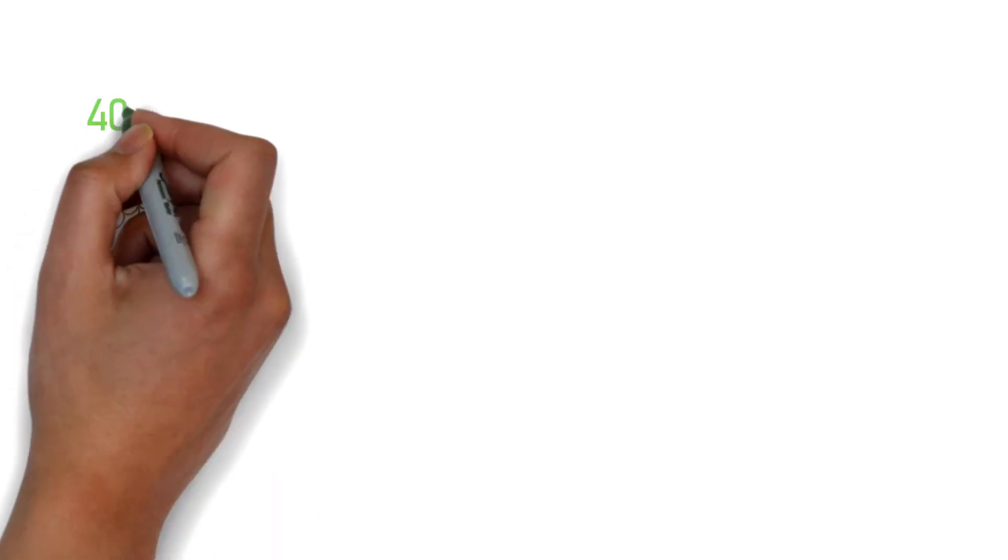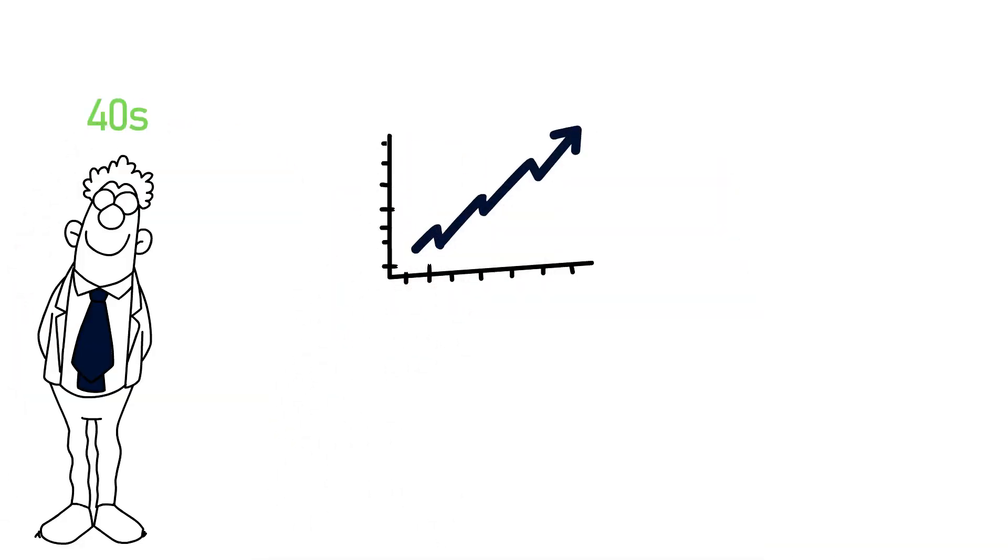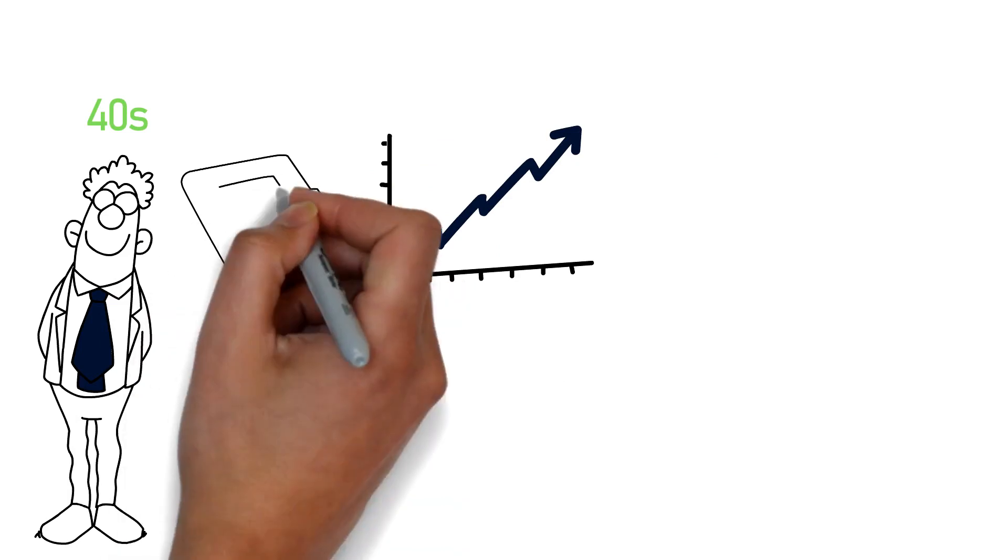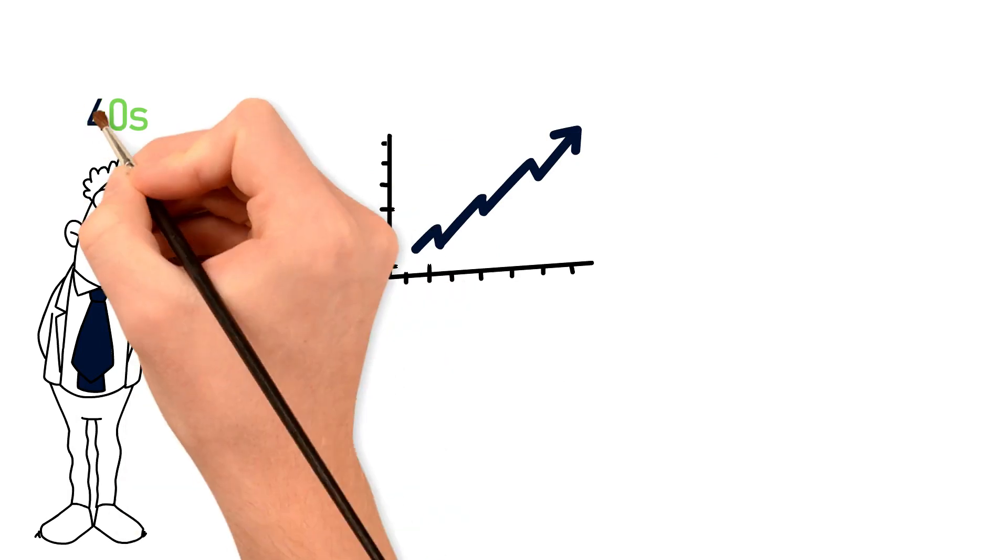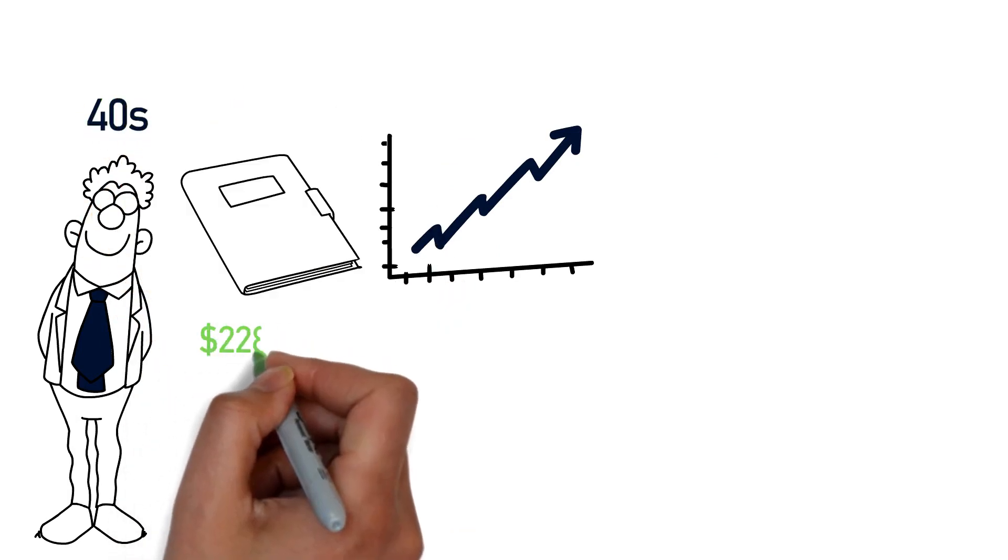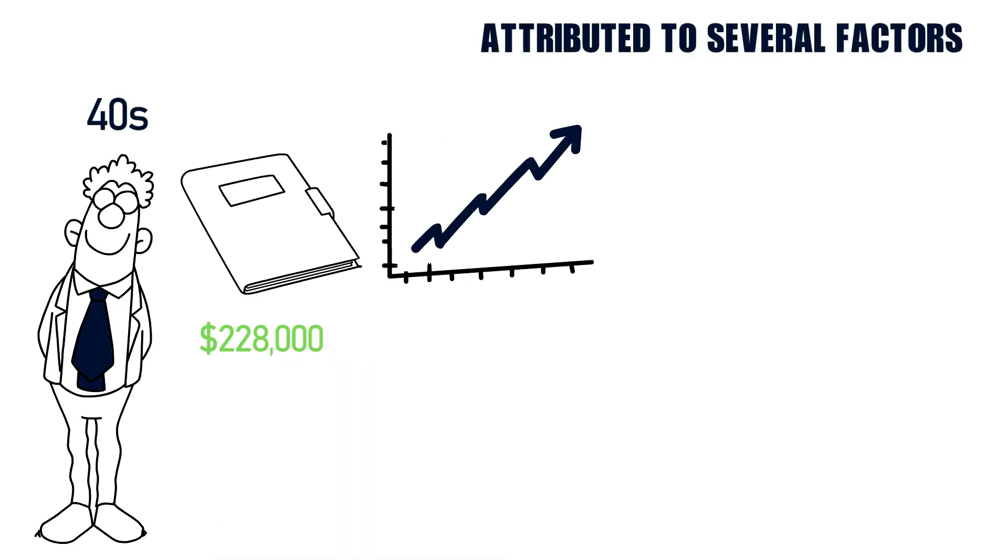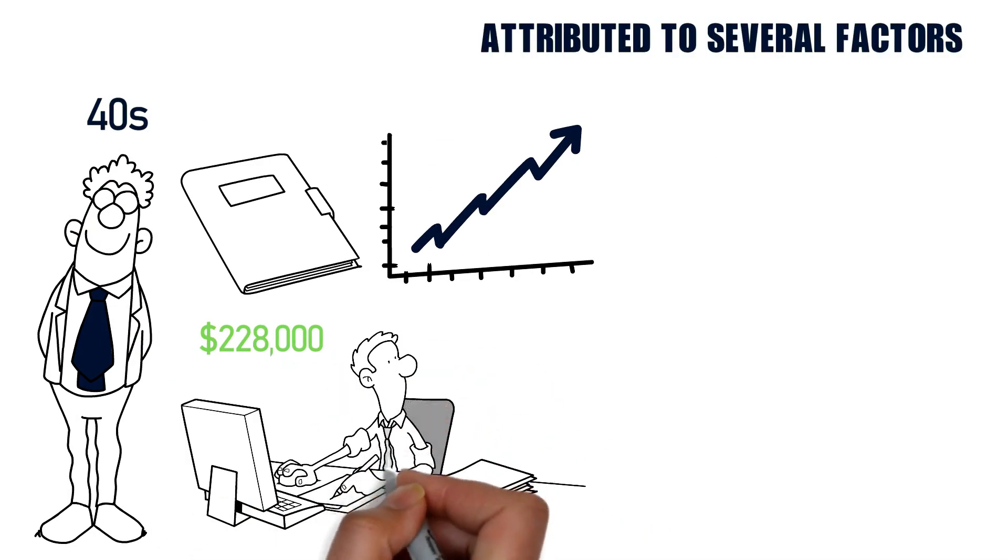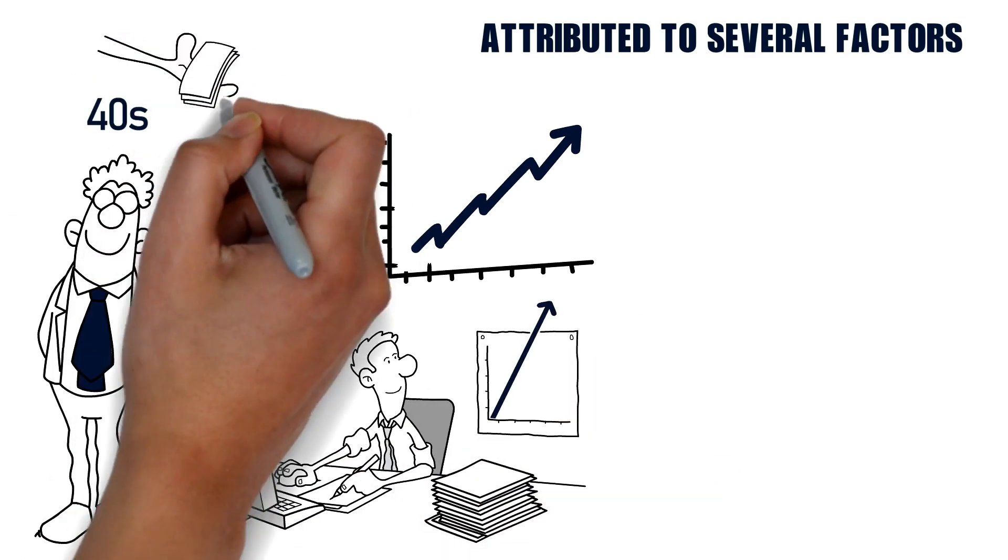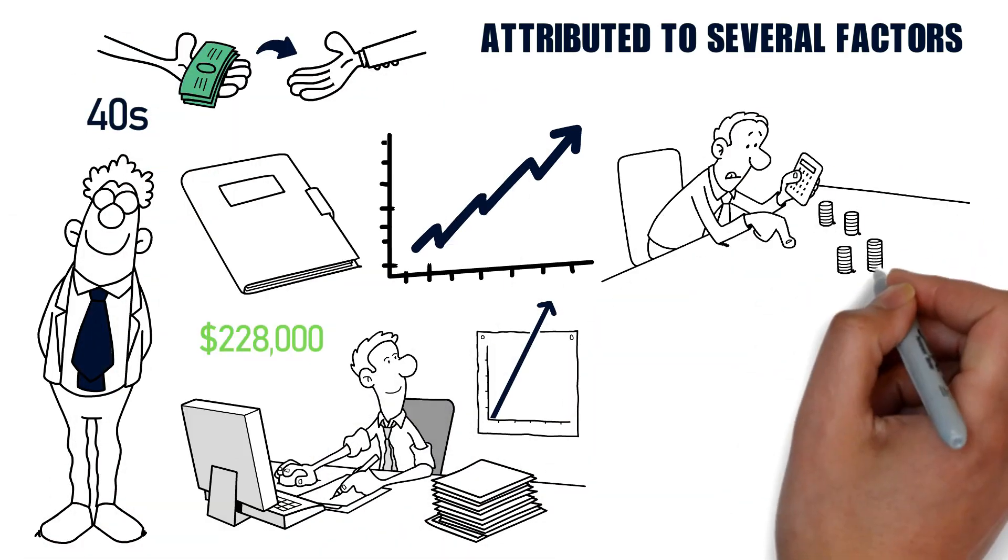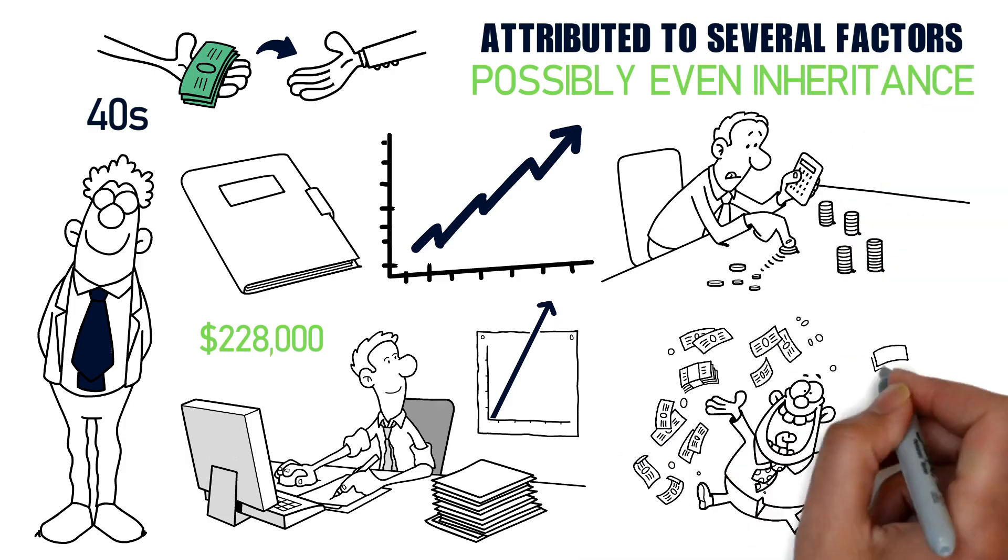For those in their 40s, the average net worth jumps even higher. According to a report by Money, the average net worth for someone in their 40s is around $228,000. This can be attributed to several factors such as increased job stability and earning potential, the ability to pay off debt and save more aggressively, and possibly even inheritance or other windfalls.